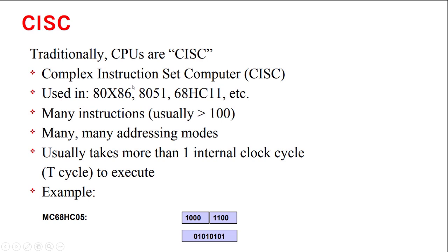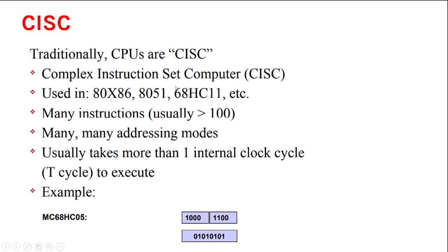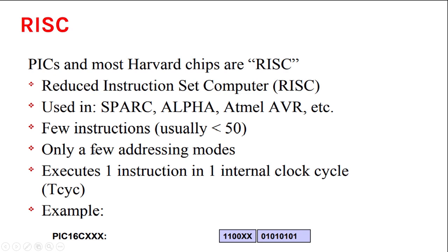Coming to CISC and RISC: CISC stands for Complex Instruction Set Computers. Most CPUs are CISC — like the Pentium 4, 8051, and 8086. PIC uses the RISC (Reduced Instruction Set Computer) architecture and Harvard architecture. CISC has many instructions and many addressing modes, and usually takes more than one clock cycle to execute. RISC has only a few addressing modes and executes one instruction in one internal clock cycle. PIC comes with RISC architecture.